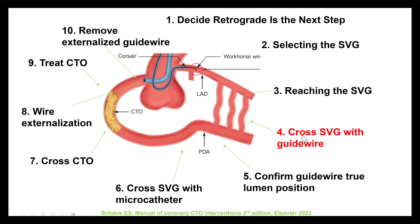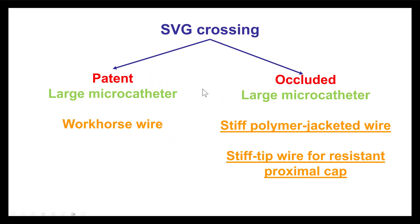Step number four is crossing the saphenous vein graft with a guide wire. This depends on whether the vein graft is open or occluded. If it's open, then a workhorse wire would typically suffice. But if the vein graft is occluded, we typically use a combination of a large microcatheter for more support, along with a stiff-tip polymer-jacketed wire like the Pilot 200, Gladius, or Raider wire. This provides good penetration while reducing the risk of perforation. If the proximal cap is hardened and calcified, a stiff-tip non-polymer wire may be used, but then it should be switched for a polymer-jacketed wire to cross the body of the vein graft.